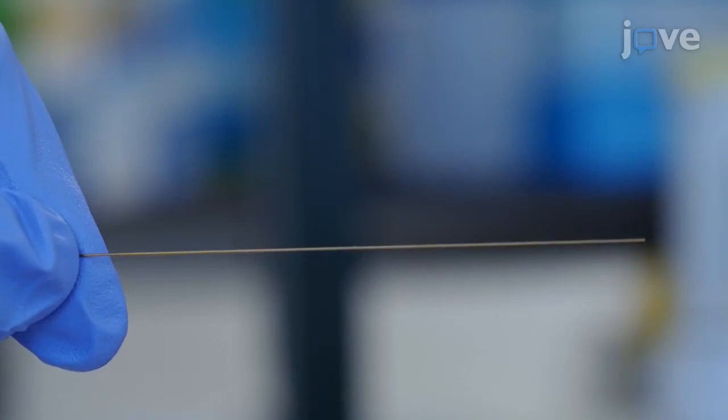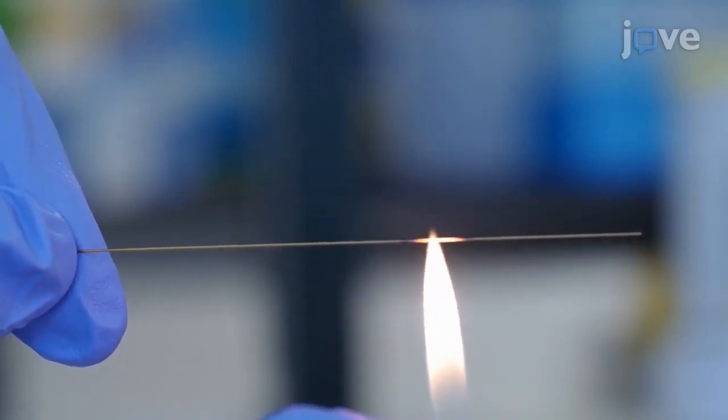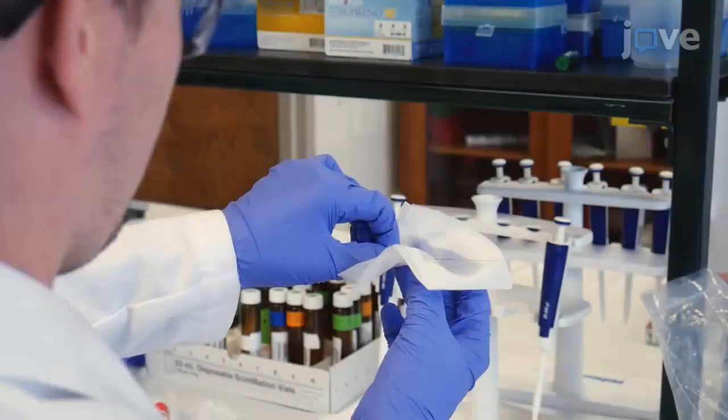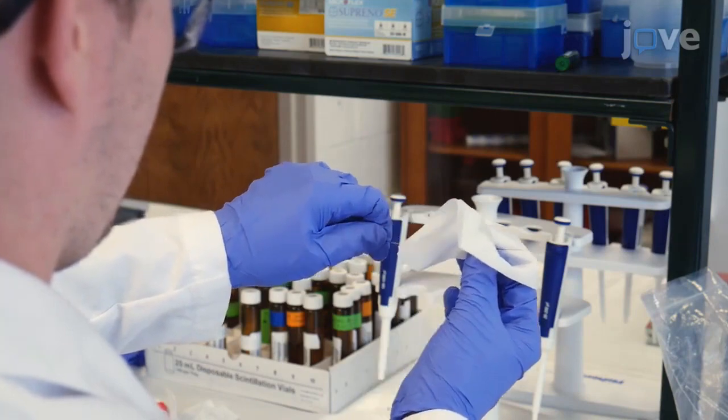Burn a portion of the capillary using a gentle flame to remove the polyamide outer coating around 4 cm away from one end of the capillary. Gently clean the burnt portion by wiping to remove the polyamide coating completely.